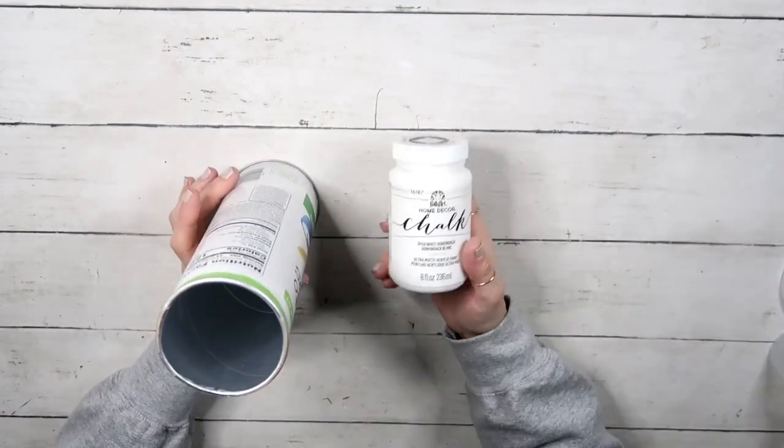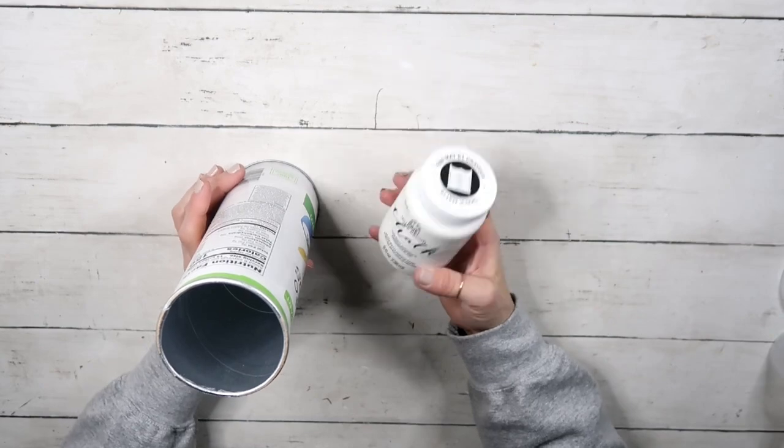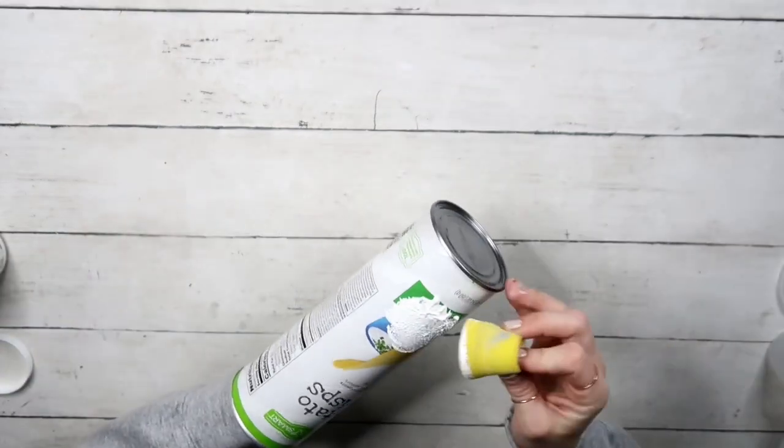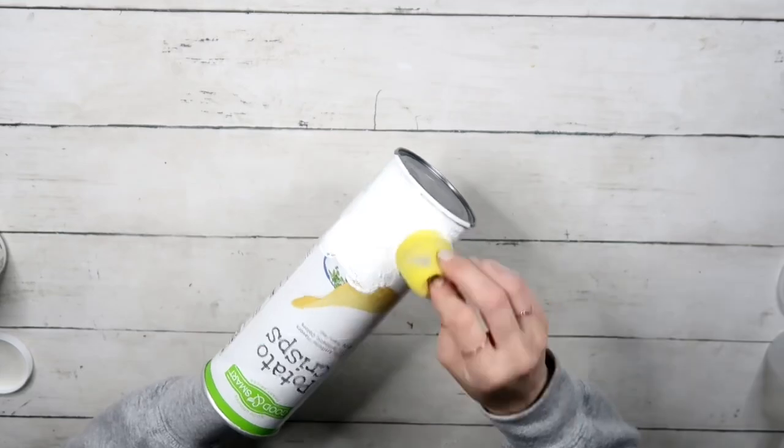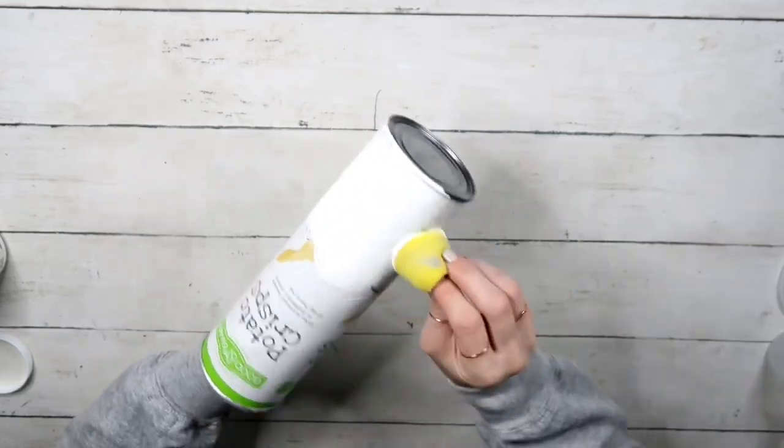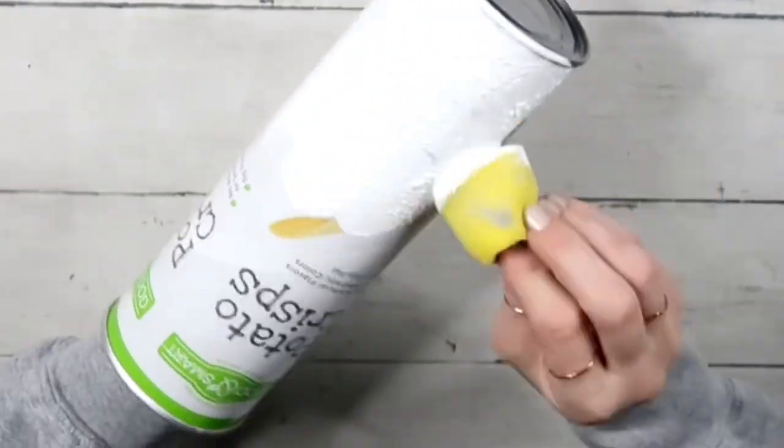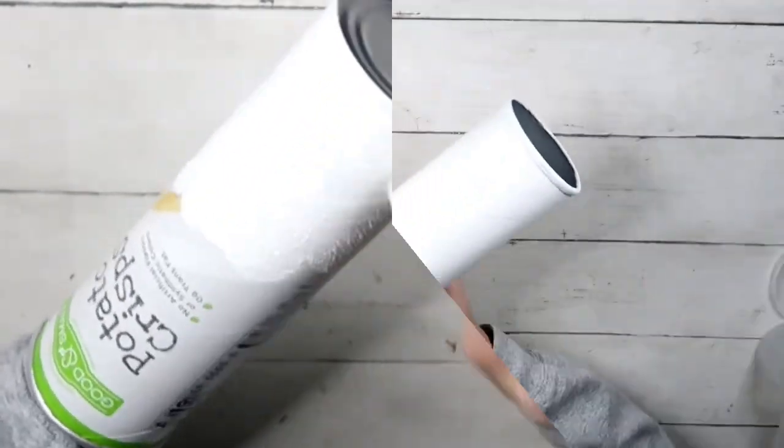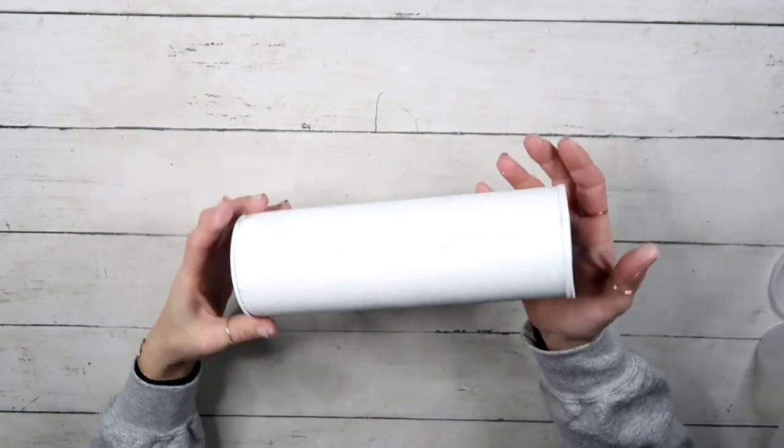I'm gonna take this chips container and I will use this Adirondack white chalk paint by FolkArt and a sponge brush. I will paint it with two coats and I just dabbed on it because I wanted that kind of texture that it leaves behind when you use a sponge brush.